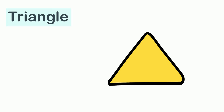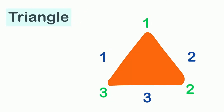This is a triangle. As you can see, a triangle has three sides — one, two, and three — and three corners — one, two, and three. The sides of a triangle do not have to be the same size. It can either have all three equal sides, two equal and one different sized side, or all three different sized sides.